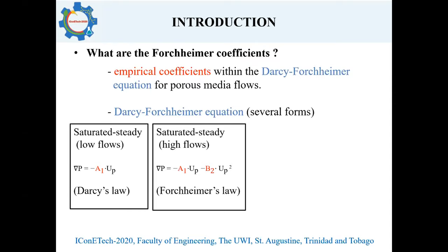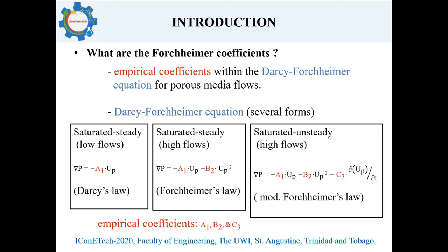The second case is also within the steady flow regime but at higher velocities, where the relationship involves a quadratic term — known as Forchheimer's law. The third case is for unsteady flows, typically formed with higher flow velocities, where an additional acceleration term is added, resulting in the modified Forchheimer's law. The Forchheimer coefficients — the empirical coefficients — are A1, B2, and C3, which are present in the relevant forms of this equation.